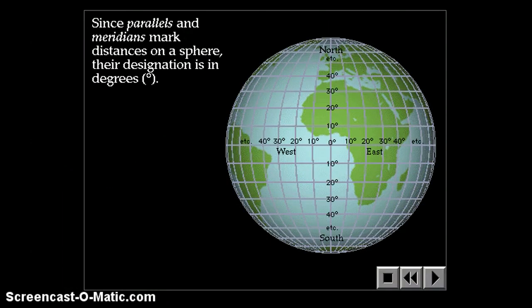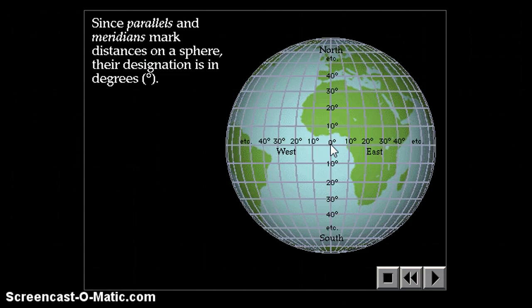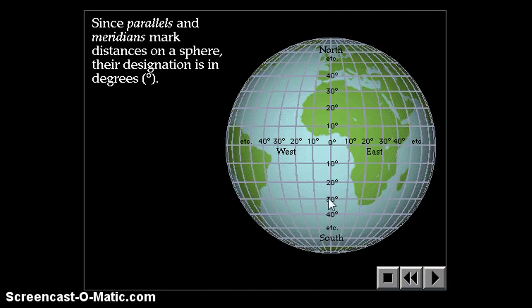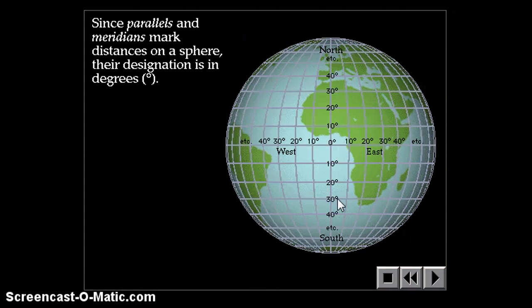The zero-zero mark where latitude and longitude are both zero is located in the ocean just south of Africa. Latitude and longitude work much like a game of Battleship — you'd say B6, find B and 6, and trace them to where they intercept. Similarly, if you're at 30 degrees south latitude and 20 degrees west longitude, you find your latitude line, then trace to 20 degrees west longitude, and that intersection is your exact point.